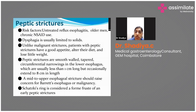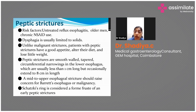Peptic strictures can develop in a patient with untreated reflux esophagitis, especially in older men who are smokers or have chronic NSAID intake. Unlike malignant strictures, patients with peptic strictures will have a good appetite and they will just alter their diet, changing from solid to liquid, without losing much weight.